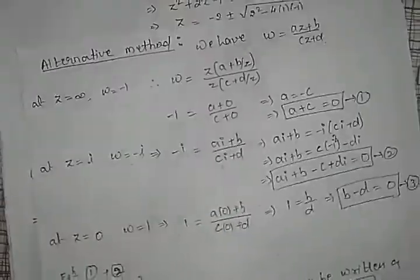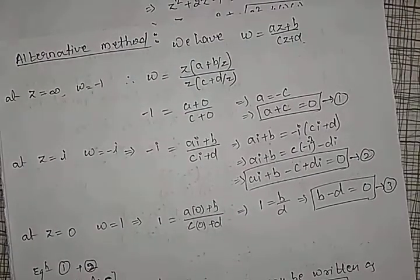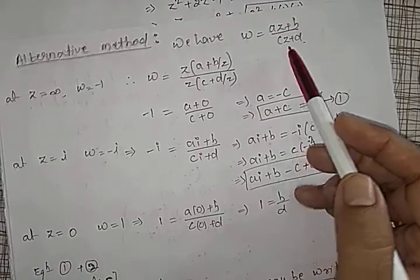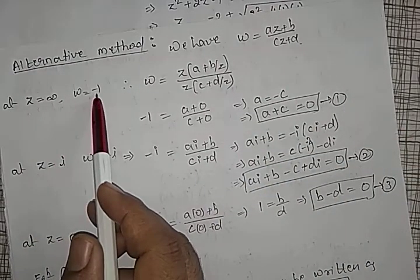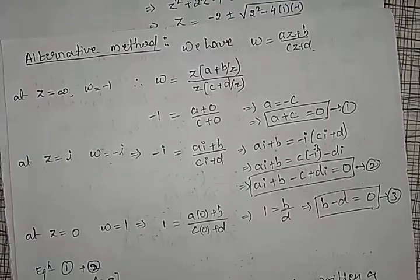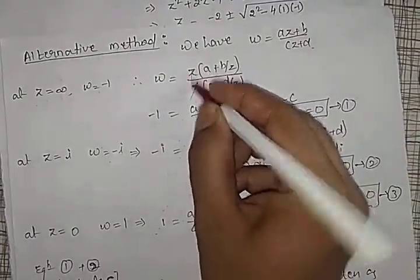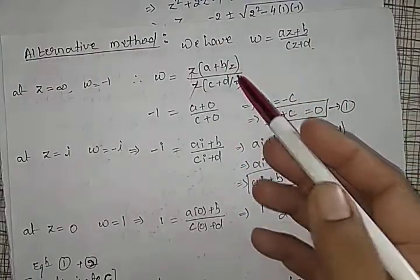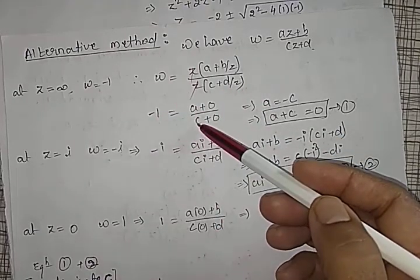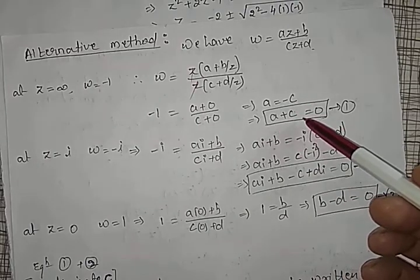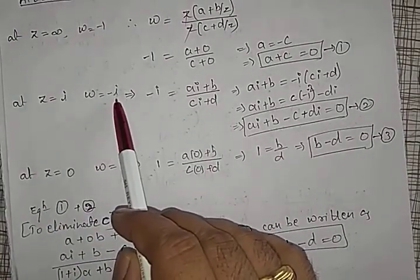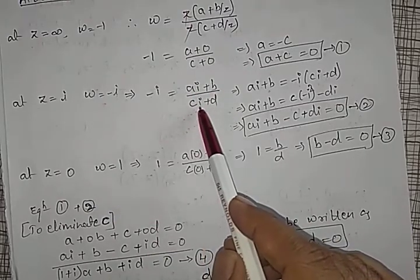The same result can be obtained by the alternate method. Write omega = (az + b)/(cz + d) where a, b, c, d are to be found. Since z = infinity maps to omega = minus 1, take z common from numerator and denominator so z cancels; b/z and d/z go to zero, giving minus 1 = a/c, so a = minus c. This is equation one. For z = i mapping to omega = minus i: minus i = (ai + b)/(ci + d). This is equation two.